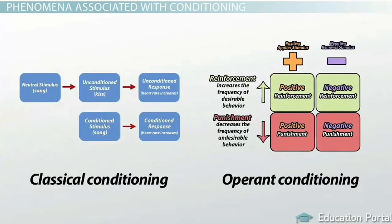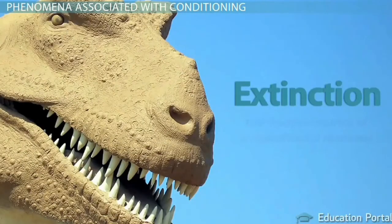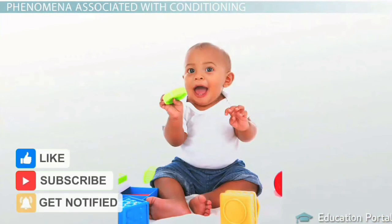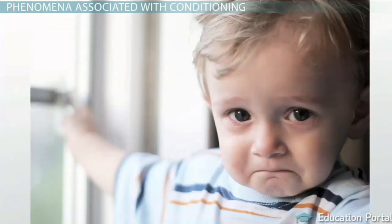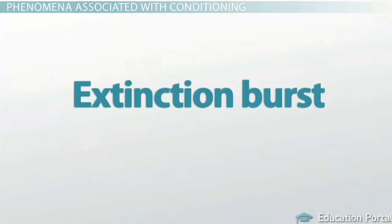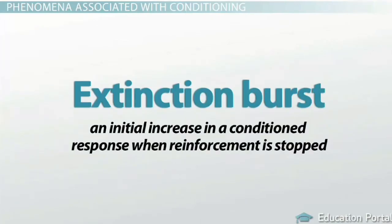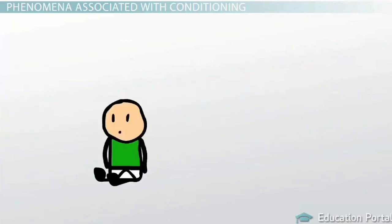Now that you understand classical and operant conditioning, let's examine a few associated terms. Extinction refers to the disappearance of a conditioned response — the response weakens and eventually disappears due to the removal of reinforcement or punishment in operant conditioning, or the removal of a paired stimulus in classical conditioning. An example is a child no longer throwing a fit after parents stop giving them what they want. Extinction burst refers to an initial increase in the conditioned response when reinforcement is stopped — the behavior increases before extinction begins to weaken it.